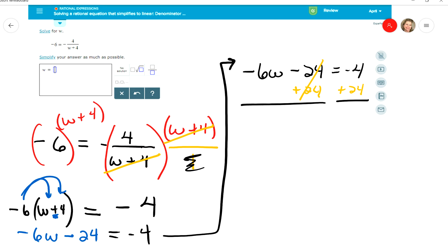So on the left side, I'll be left with negative 6W, and on the right side, if you have a negative 4 plus 24, these four negatives are going to cancel out four of the positives and leave you with positive 20.